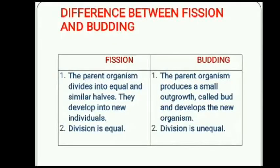Now the difference between fission and budding: in fission, the parent organism divides into equal and similar halves that develop into new individuals. In budding, the parent organism produces a small outgrowth called a bud that develops into a new organism. In fission the division is equal; in budding the division is unequal.